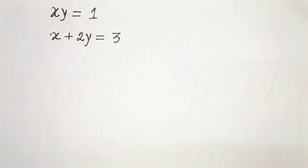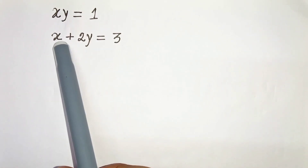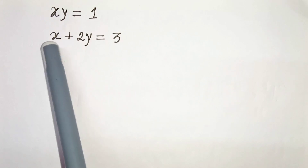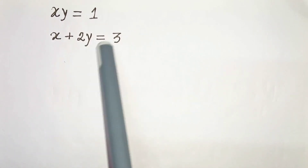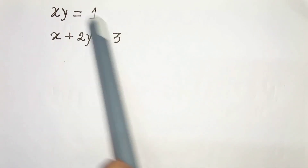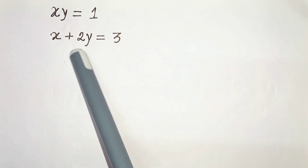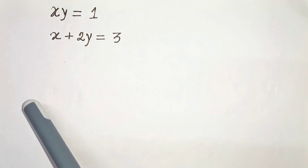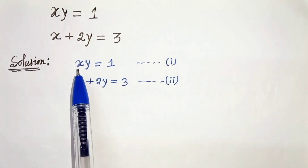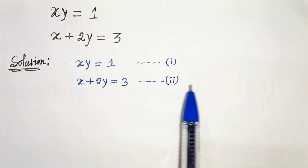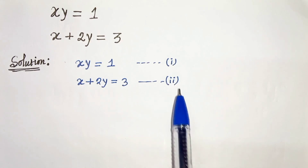Hello everyone. In this video we have two equations: x·y equals 1 and x plus 2y equals 3. We have to solve these two equations and find the value of x and y. So let's start. x·y equals 1 is our equation 1, and x plus 2y equals 3 is our equation 2.